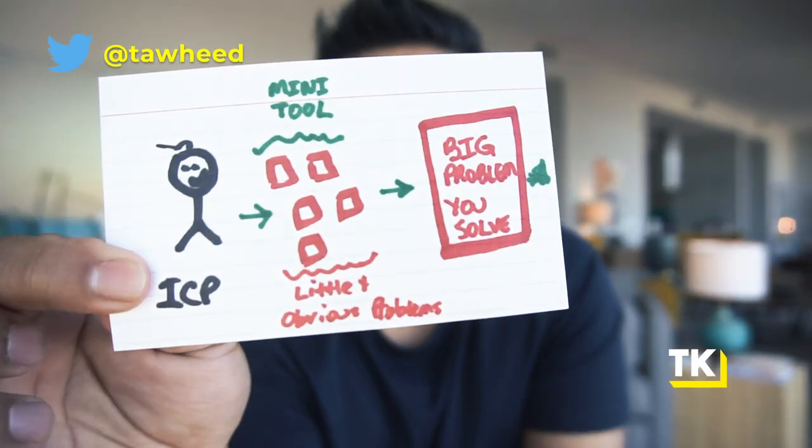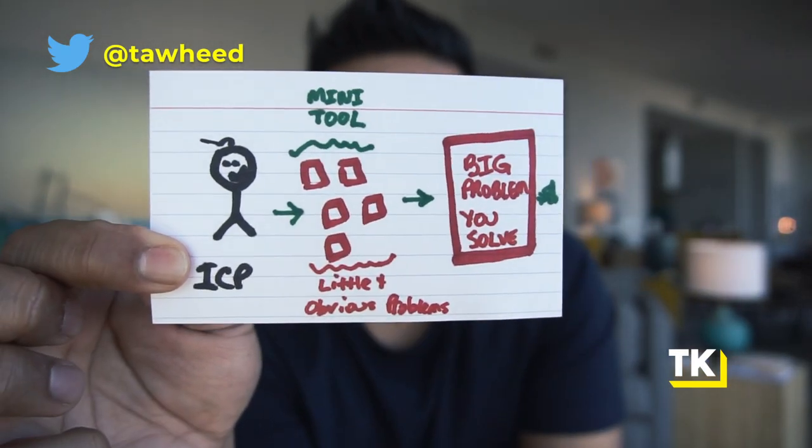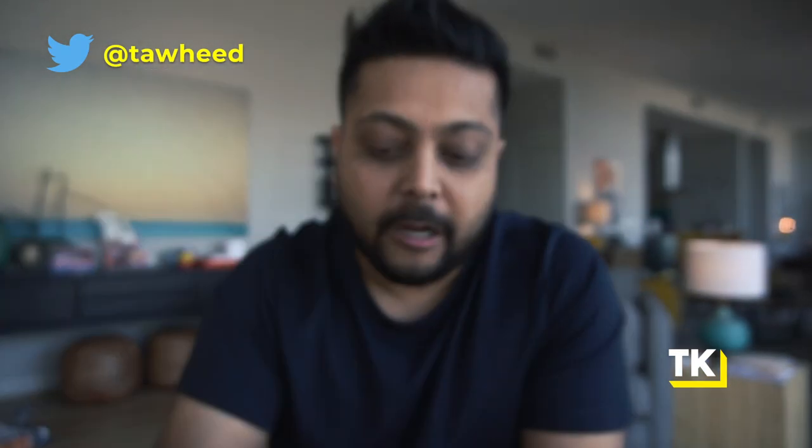Then you upsell them: 'By the way, if you have these smaller problems, that means you have this bigger problem — and here's the bigger opportunity.' By the time you've solved the small problem for them, they trust you, and you can get them to realize the bigger problem, which is your core product. That's the core principle of the 'Tell Me Where It Hurts' growth hack.